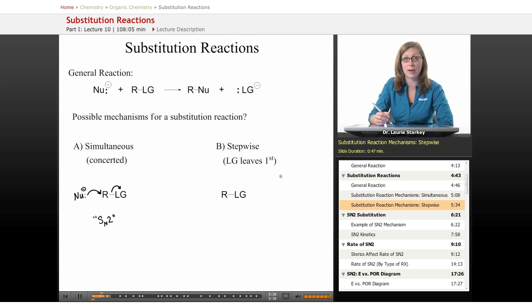Another possibility is that we have a stepwise mechanism in which the leaving group leaves first. If the leaving group leaves, what does that leave behind on this carbon? This carbon is now missing a bond, so this would end up being a carbocation.